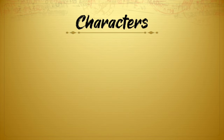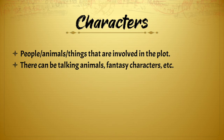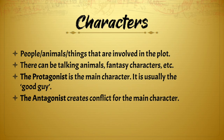Let's take a look at characters first. Characters are people, animals, or things that are involved in the plot of the story. There can be talking animals, fantasy characters, etc. The protagonist is the main character — it is usually the good guy. The antagonist, instead, creates conflict for the main character — it is usually the bad guy.